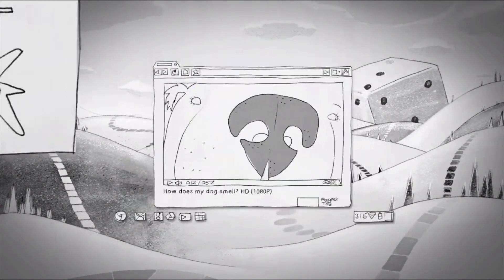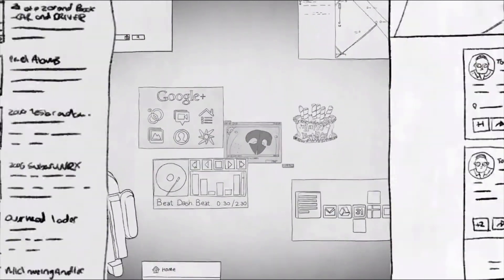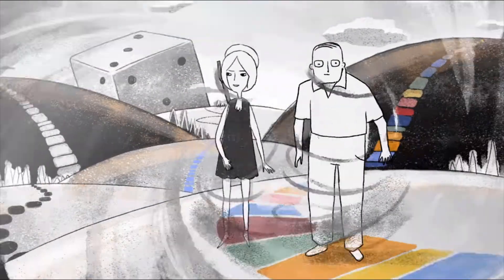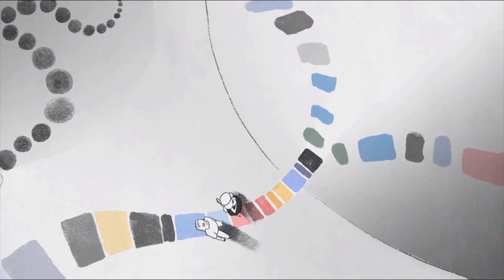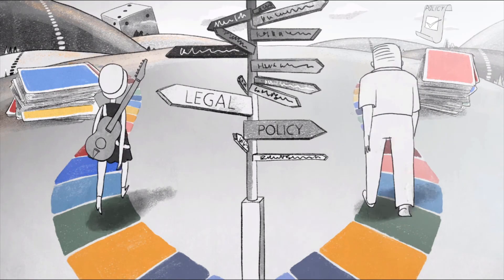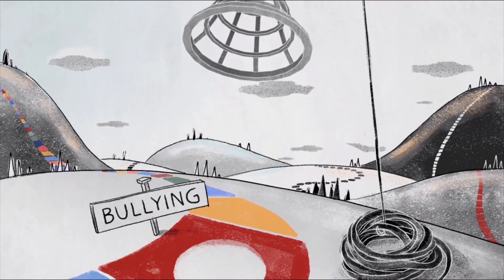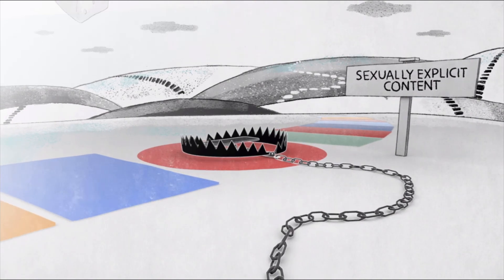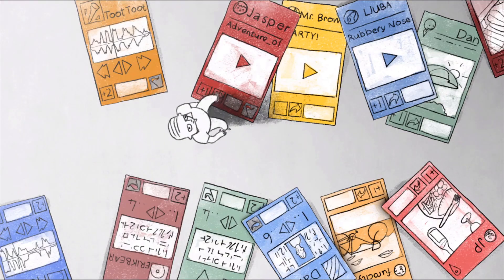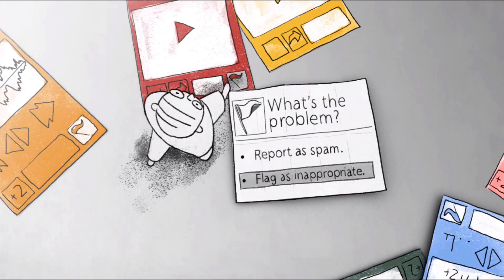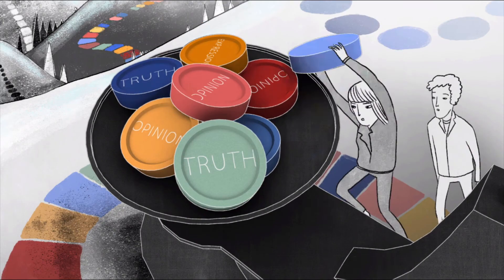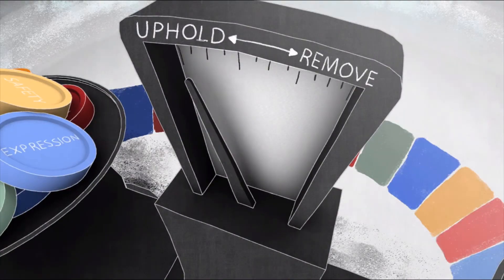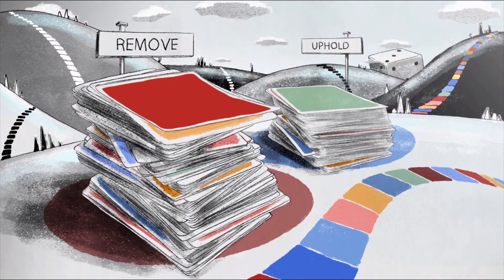Every day, millions of people around the world post content to Google platforms — things like videos on YouTube, blog posts on Blogger, and social media posts on Google+. Occasionally people are concerned about the content they see. Some say they've seen content that violates the law; others think they found something against Google's content policies. We want people to tell us when they see content that may violate our policies, including bullying, hate speech, graphic violence, or sexually explicit content. On many Google products there's a way to report these violations, and Google takes these reports seriously, reviewing complaints on a case-by-case basis. If flagged content violates guidelines, we take it down.